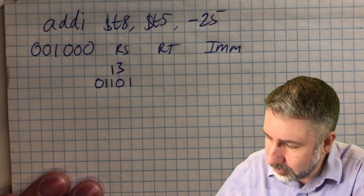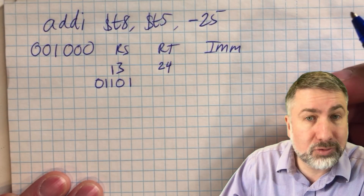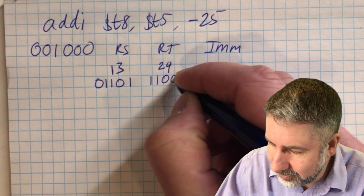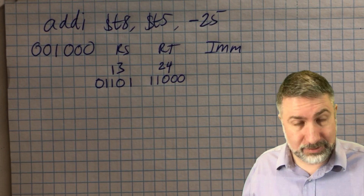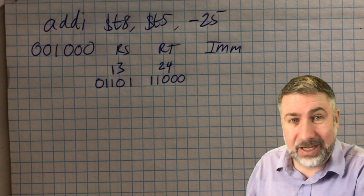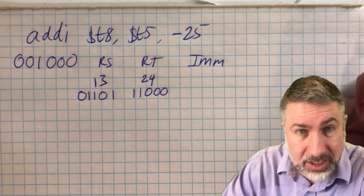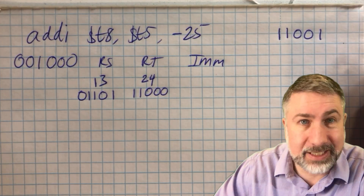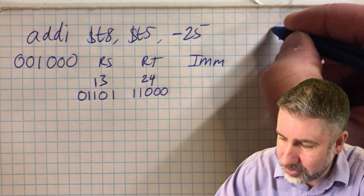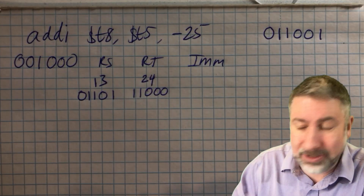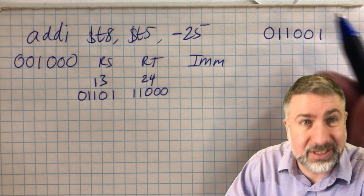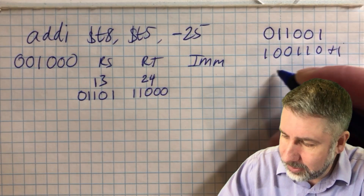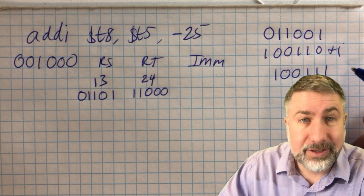Now what's the immediate value? It's negative 25. First, positive 25: we just said 24 is 11000, so 25 is 11001. But we need to make it negative, so we flip the bits and add 1. Flipping 11001 gives 100110, plus 1 is 100111. That's negative 25 in two's complement. Now we want to sign-extend it to 16 bits — since it's negative, we extend with 1s out to the left.